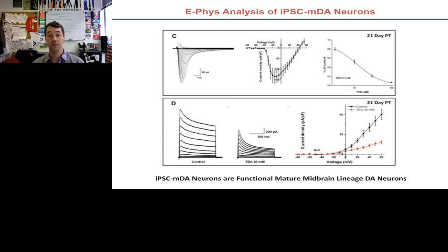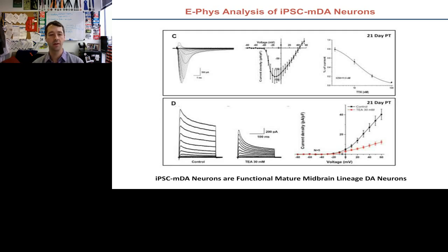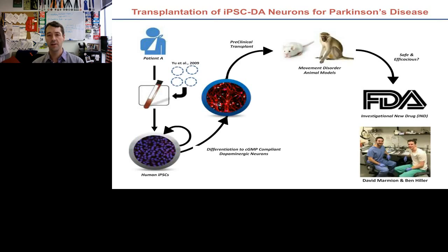There's been quite a bit more electrophysiology and MEA data generated by Kyle Mangan at CDI as well as in Jim Surmeyer's group, really showing these cells have the right receptors and respond in a way very similar to a midbrain dopamine neuron. At this point we're quite convinced we have the real deal — the right type of dopaminergic neuron with very high post-thaw viability. The next step, which our group specializes in, is testing these cells in animal models of movement disorders: the 6-hydroxydopamine lesion rat and the MPTP-lesion primate.